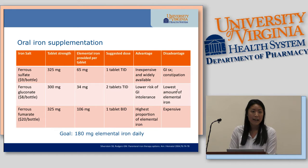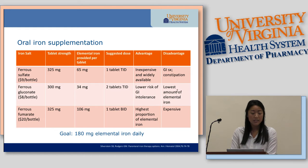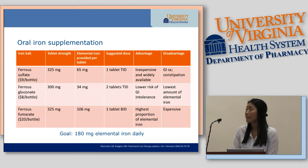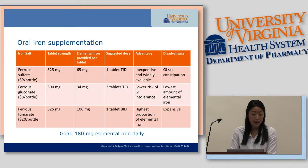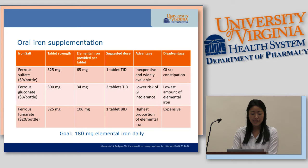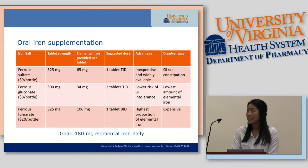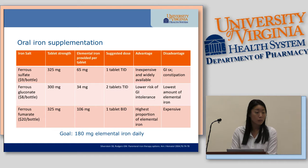The options for oral iron supplementation: the most common is ferrous sulfate — it's inexpensive and widely available, but has GI symptoms associated with it, mainly constipation. Ferrous gluconate has a lower risk of GI intolerance, but has the lowest amount of elemental iron. Ferrous fumarate has the highest proportion of elemental iron, but is more expensive at about $20 a bottle.